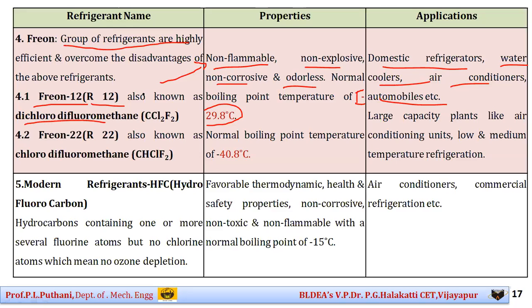Freon-22 (R-22), also known as chlorodifluoromethane (CHClF2), has a boiling point of −40.8°C. It is preferred for large capacity plants such as air conditioning units with low and medium temperature refrigeration applications.